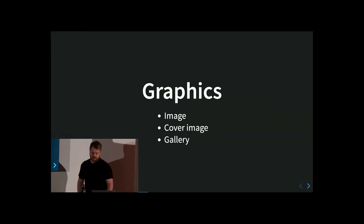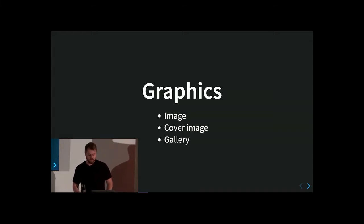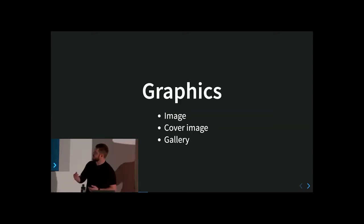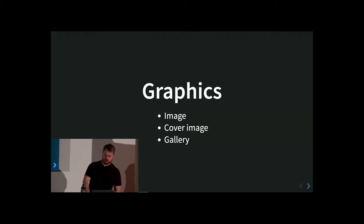Next we have the graphical blocks. We have a block for a single image. We have a block for expressing the meaning of a cover image — we're providing the additional meaning that this is a cover image for our article. Then we have the gallery, which allows us to select — it's a portal into WordPress media, allowing us to upload or use things already in WordPress media to display a gallery, and it will automatically lay out the gallery in a nice way. Here's an example of the cover image, which also supports a caption.